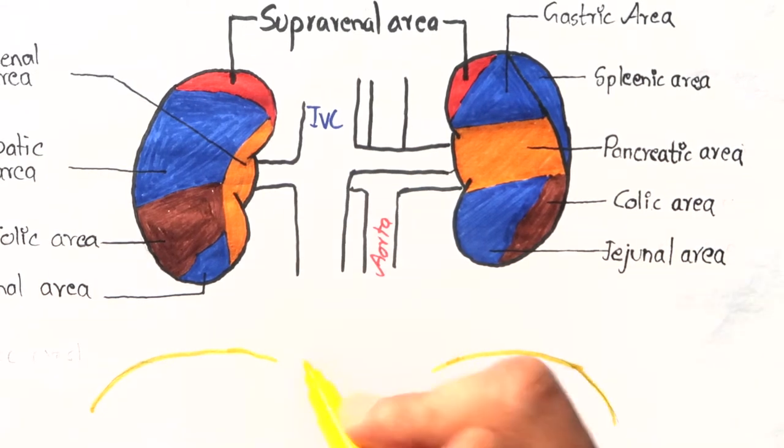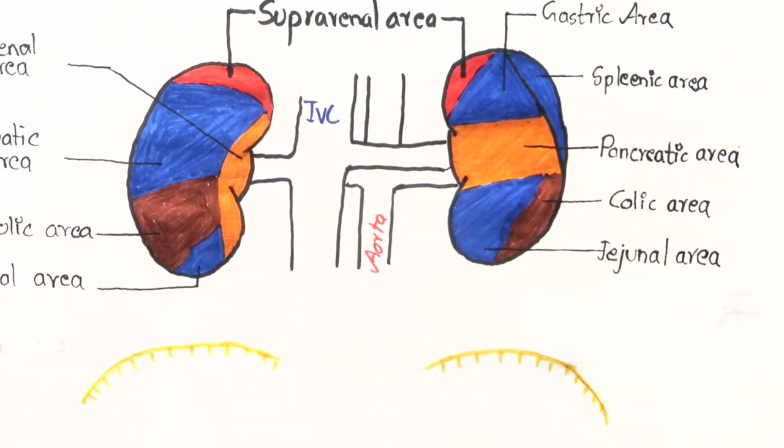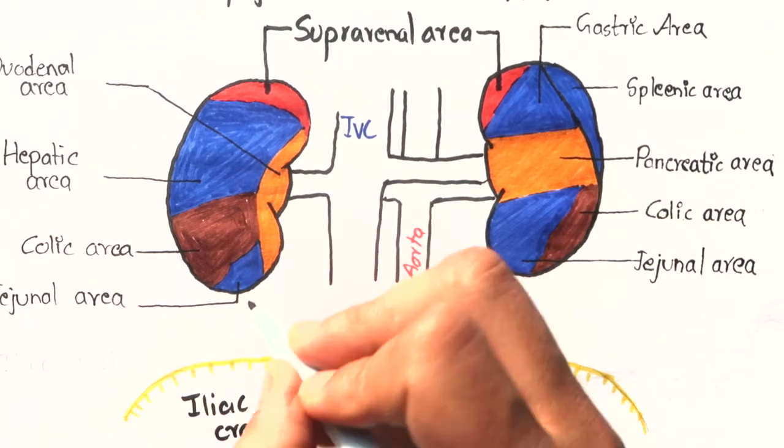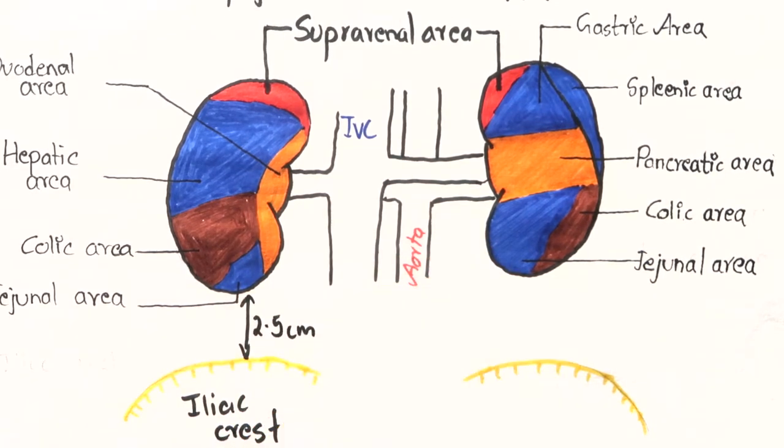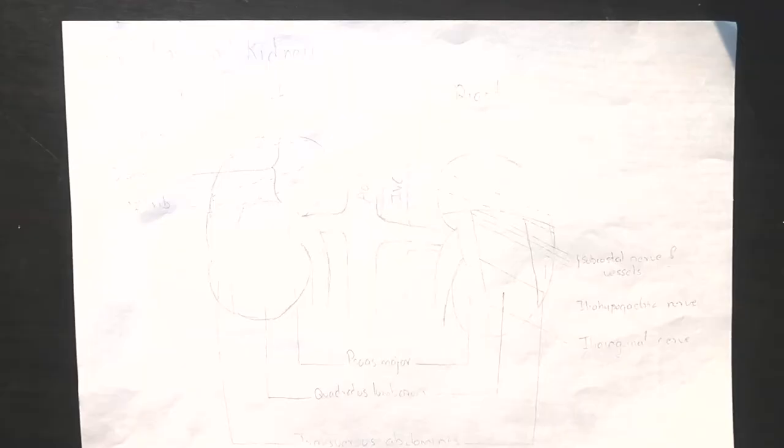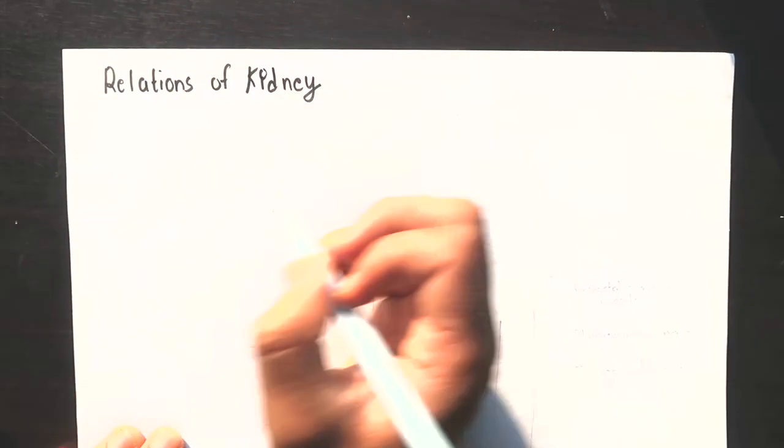And if you wonder what lies below the kidneys are the iliac crest, just about 2.5 cm below kidney.